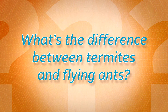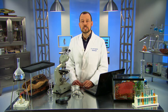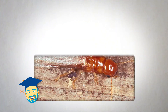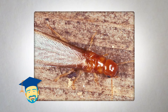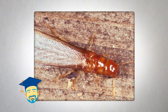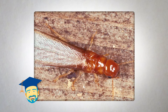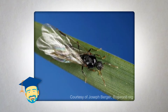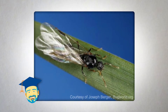What's the difference between termites and flying ants? I'm Dr. Jim Fredericks, Chief Entomologist at the National Pest Management Association. If you're trying to find out if an insect in your home is a flying ant or a termite, there are three things you can look for to help distinguish between the two: the antenna, the waist, and the wings.